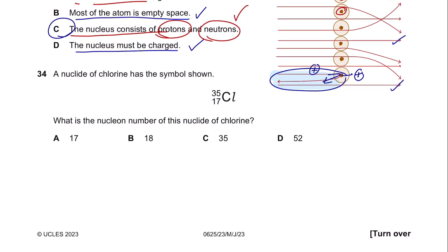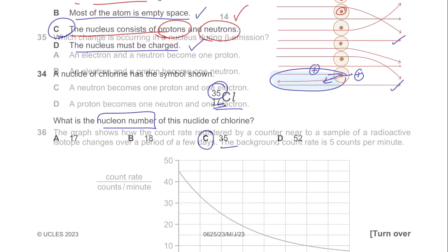Question 34. A nuclide of chlorine has the symbol shown. What is the nucleon number of this nuclide? The top number is the nucleon number and the bottom is the proton number. So the answer is C.